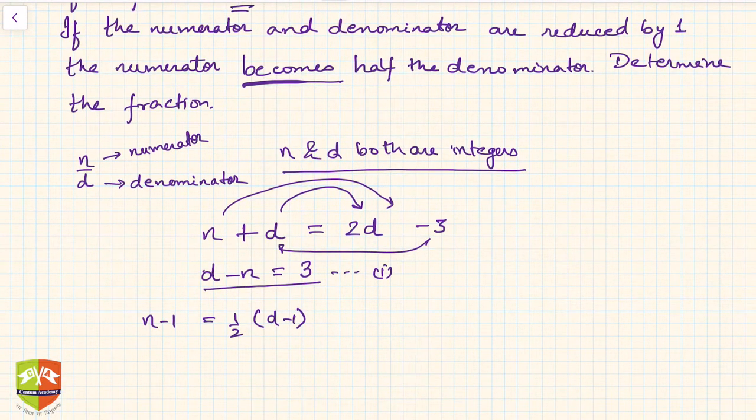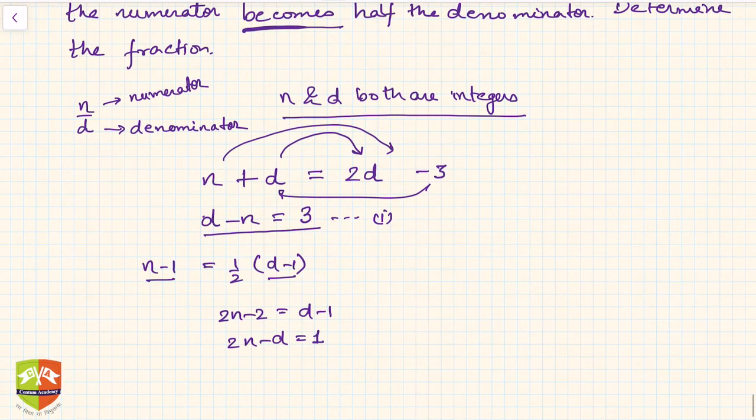So n minus 1 becomes half d minus 1. This is the numerator, one subtracted from numerator and one subtracted from denominator. Once you do this, the numerator will become half the denominator. Let us simplify this. You will get 2n minus 2 equals d minus 1. That means 2n minus d equals 1. This is equation number 2.